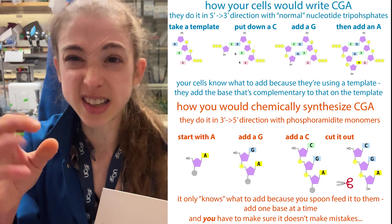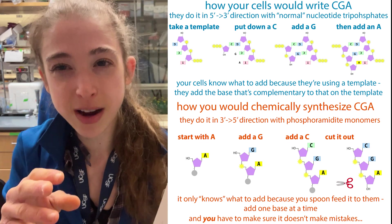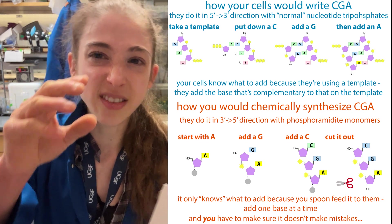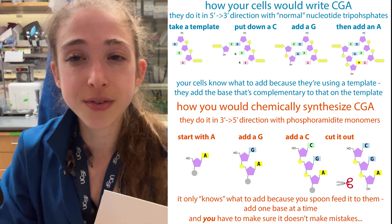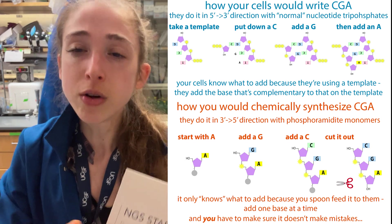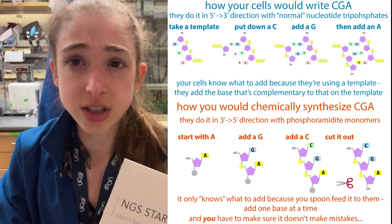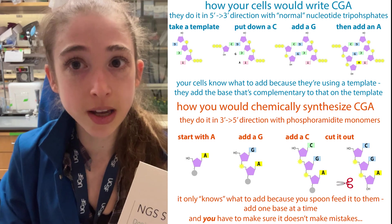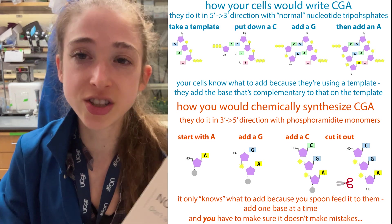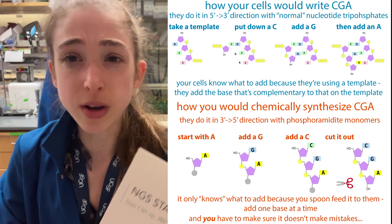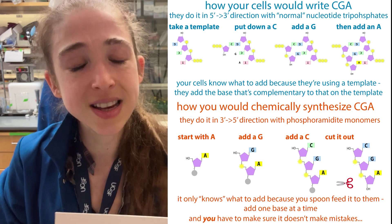When they do the synthesis, they make it backwards, so it doesn't have the phosphate group unless you tell them to add it — which might have some implications for various cloning strategies. So just be aware of that.